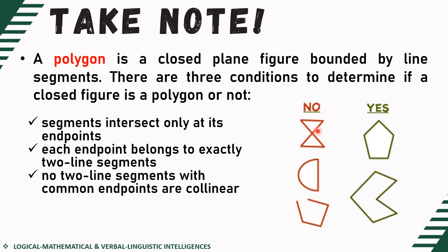Now in our second example, it's not a polygon because in our general definition, it should be bounded by line segments, and a line segment is a straight line. As you can see, it has a curved side, so that means it is not a polygon.